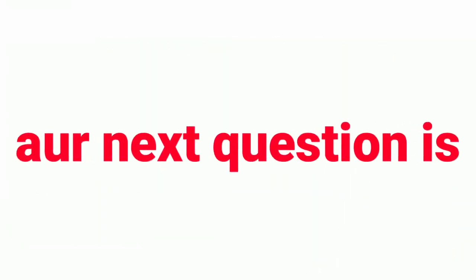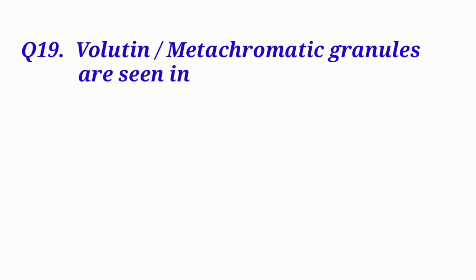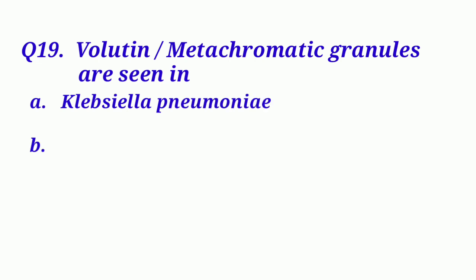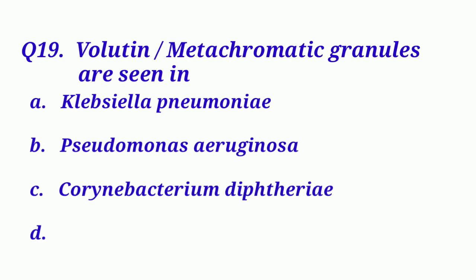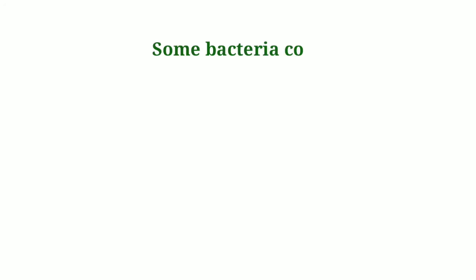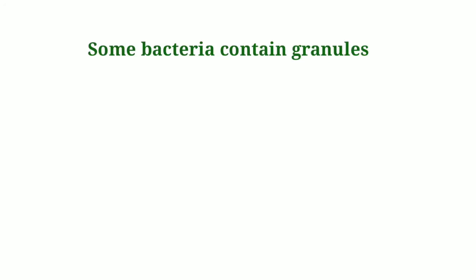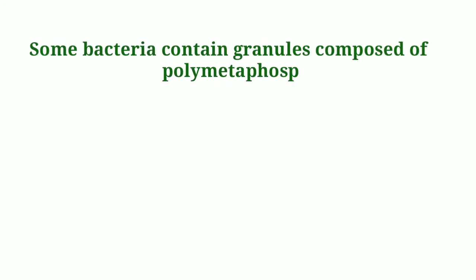Our next question is: Volutin or metachromatic granules are seen in. Option A: Klebsiella pneumoniae. Option B: Pseudomonas aeruginosa. Option C: Corynebacterium diphtheriae. And Option D: Staphylococcus aureus. We know some bacteria contain granules composed of polymetaphosphate.